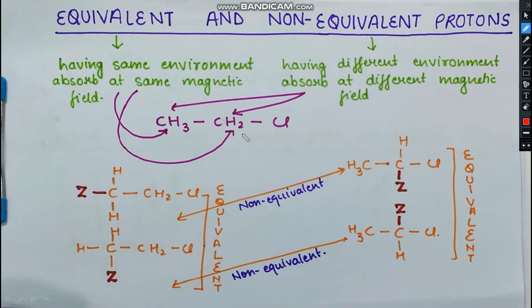We get a single peak for equivalent hydrogens — equivalent protons do not give different peaks. For a CH₂ where both hydrogens are equivalent, we get only one peak. In a CH₃ group where all three hydrogens are similar, we also get one peak. Non-equivalent protons give different peaks. So for a compound like CH₃CH₂Cl, instead of five expected peaks we get only two, because the CH₃ protons are equivalent among themselves and the CH₂ protons are equivalent among themselves, but the two groups are non-equivalent with respect to each other.